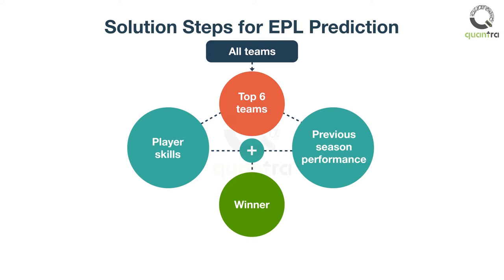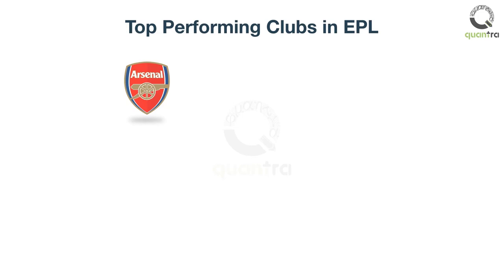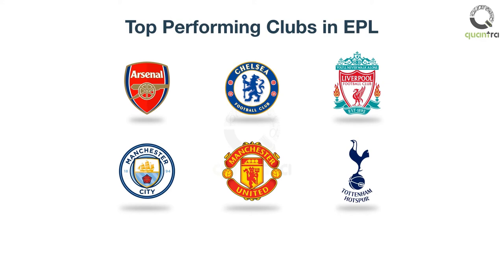Let's get started with the first step. As per the data of the last three seasons, we have learnt that the winner of EPL is changing, but the top six clubs remain the same. These clubs are Arsenal, Chelsea, Liverpool, Manchester City, Manchester United, and Tottenham Hotspur. The winner this season is very likely to be from these top six teams. We will perform all our modeling on these six clubs.